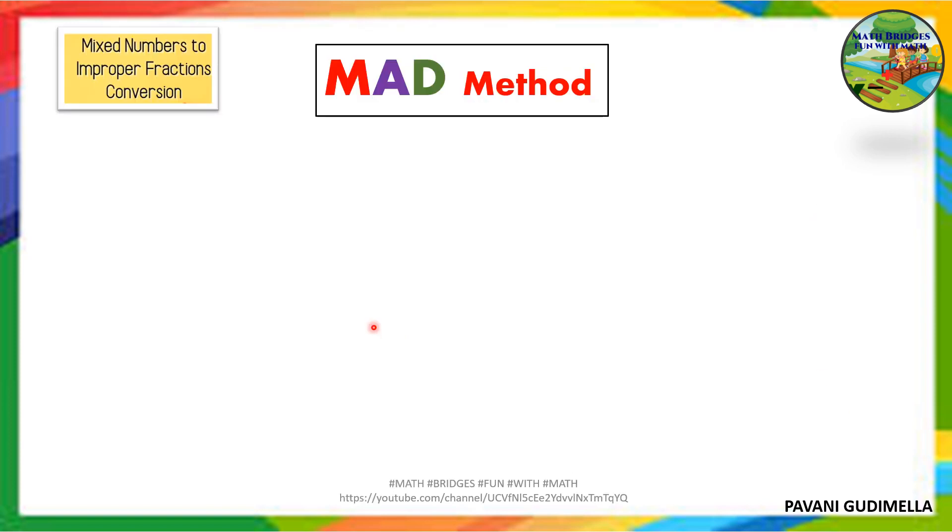Now let's see through an example how to convert a mixed fraction into an improper fraction. Let's consider 3 2/5. MAD method - it may sound very odd and you may laugh also. It's just a mnemonic which will help you to solve this problem in an easy way through 3 steps. What are these 3 steps? Let's see. First one: M.